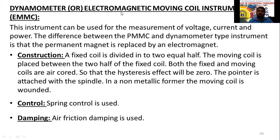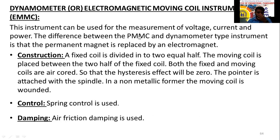Instead of a permanent magnet we are going to use an electromagnet. An electromagnet is nothing but a coil wound with wire. So permanent magnets are replaced by electromagnets — all other working principles remain the same.